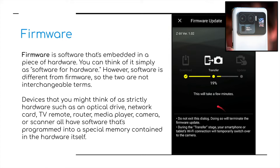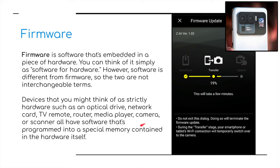Firmware is a term you'll have seen before, probably on mobile phones — it refers to updating software to make something run better, for example the camera on our mobile phones. Firmware is software that's embedded into a piece of hardware; you can think of it as simple software for hardware. However, software is different from firmware, so the two are not interchangeable terms. Devices that you might think of as strictly hardware — such as an optical drive, network card, TV remote, router, media player, camera, or scanner — all have software programmed into a special memory contained in the hardware itself. This is what's known as firmware.